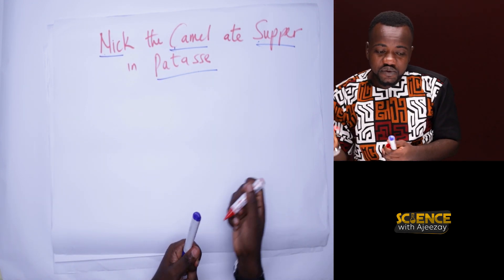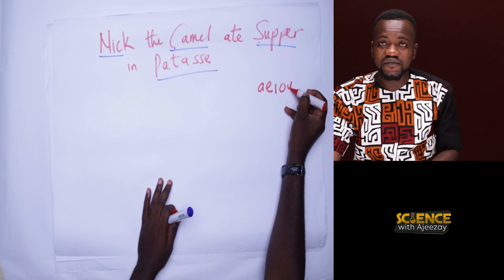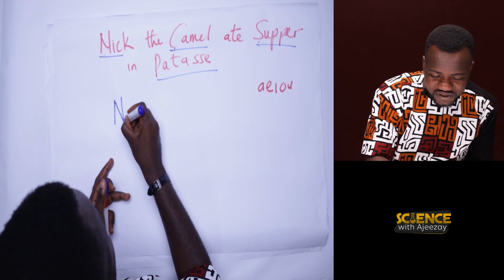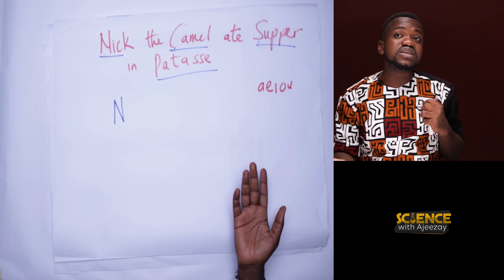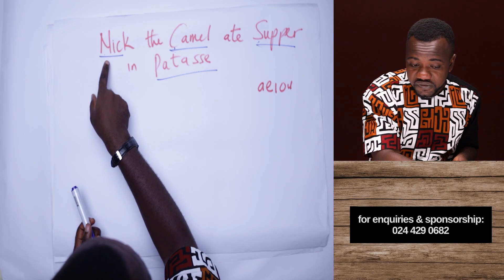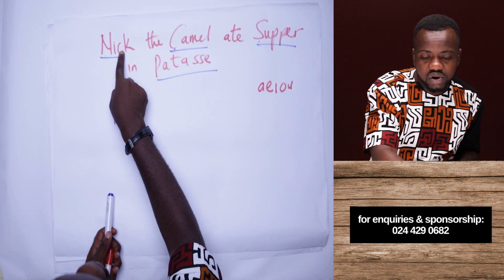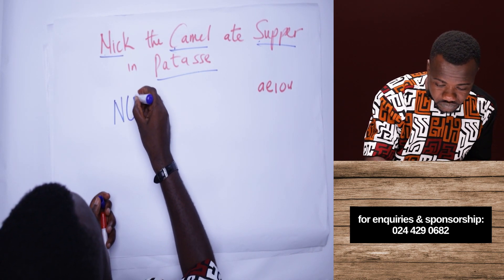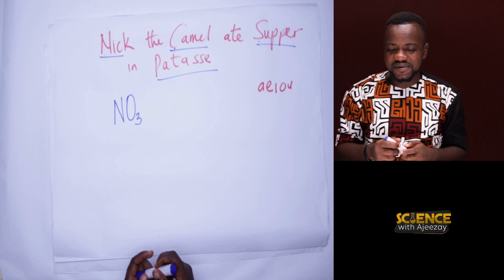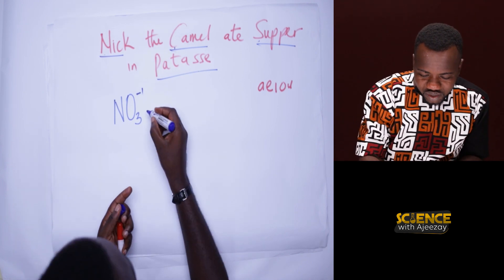For nitrogen, use the word NIC. The number of consonants represents the number of oxygen atoms. In NIC, the consonants are N, C, and the closing consonant — that is 3 consonants, so we have 3 oxygens: NO₃. The vowel count gives the charge — there is 1 vowel I, so the charge is minus one. This gives us NO₃⁻, which is nitrate.